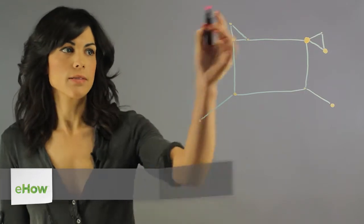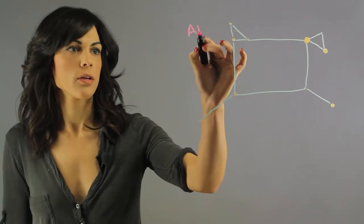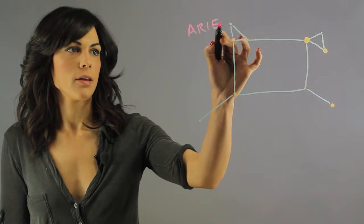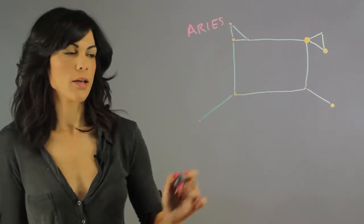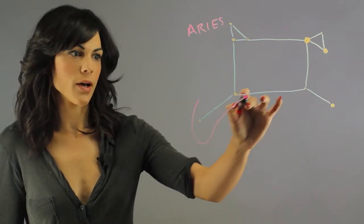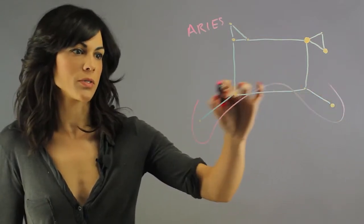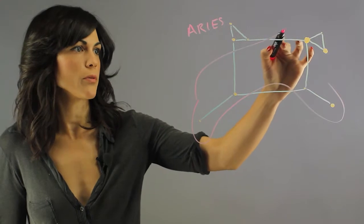So the Ram constellation is Aries, and it's over here, and it kind of looks like this on a good night. These are the legs of the Ram, and I can try to attempt to draw this, but I am not going to be very successful.